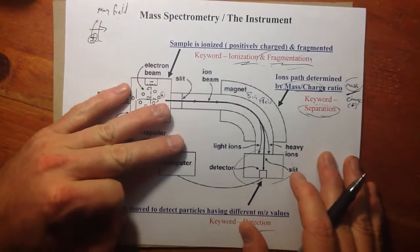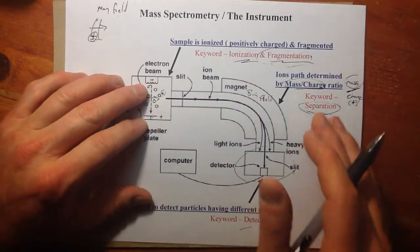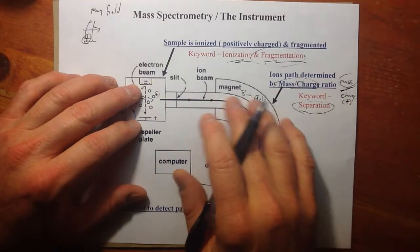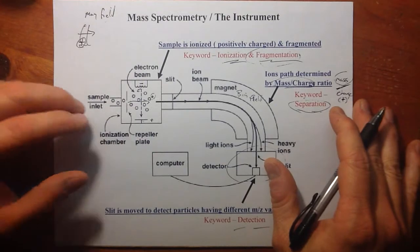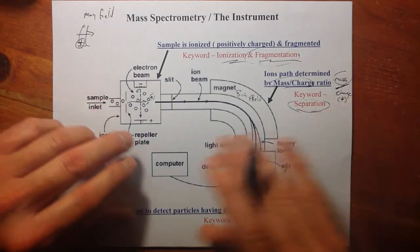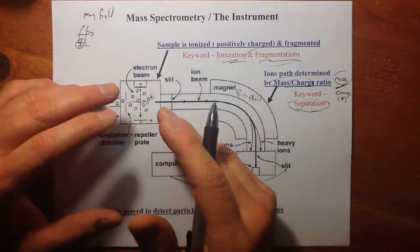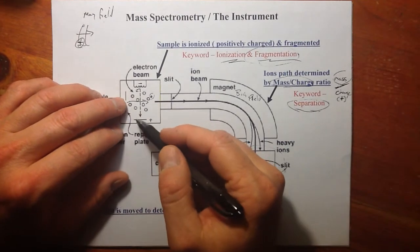So how does it work? We really have sort of three regions: the ionization chamber, the separation chamber or stage, and the detection. We have to introduce sample as a gas and in a gas phase, ionize it.